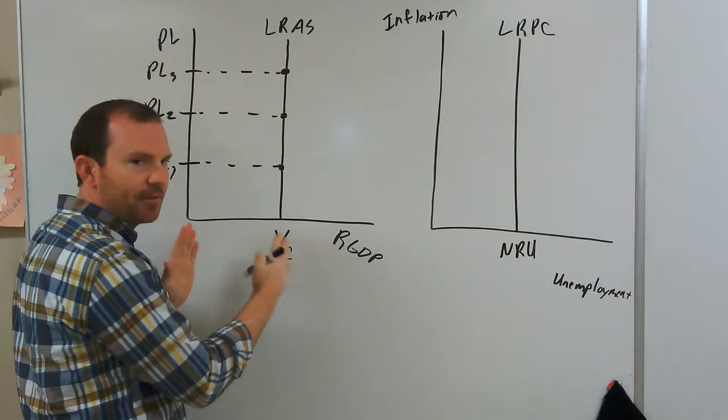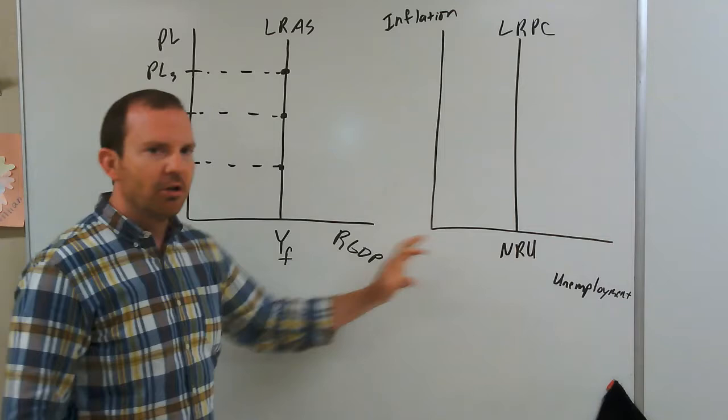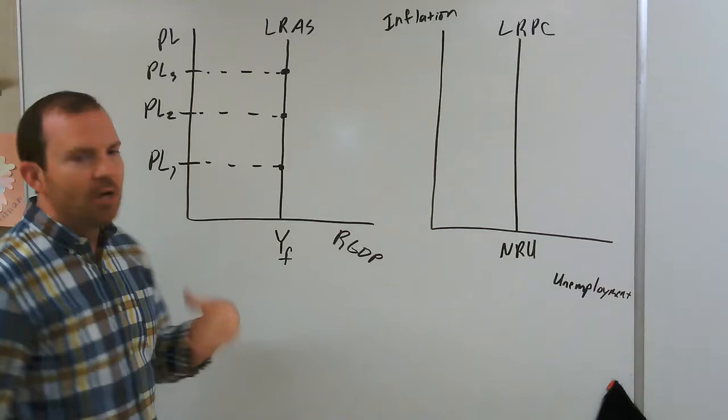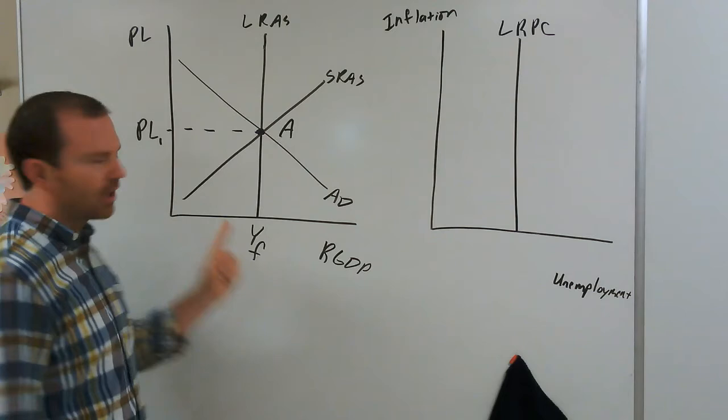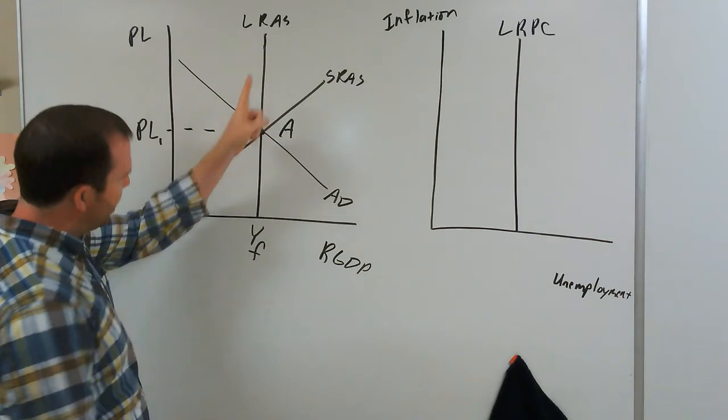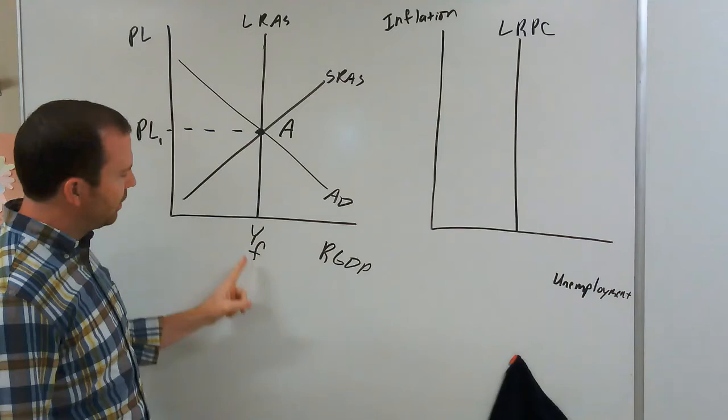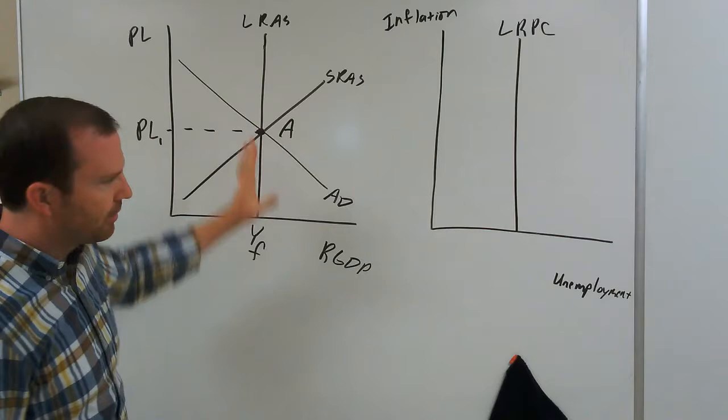Now I want to talk about what happens when we add in our short-run curves and how that looks in terms of long-run equilibrium. If you look at this graph, we're at long-run equilibrium — we're operating on our long-run aggregate supply curve at point A, with this price level and this output. So how does long-run equilibrium look on the Phillips curve graph? We've got to add in our short-run Phillips curve.